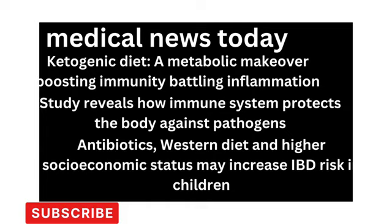Omega-3 fatty acids are considered essential because the body cannot make them and must obtain them through foods such as fish, nuts, and seeds. DHA levels are especially high in the brain and important for a healthy nervous system. Infants obtain DHA from breast milk or formula, and deficiencies of this fatty acid have been linked to problems with learning and memory. To get to the brain, omega-3 fatty acids must pass through the blood-brain barrier via the lipid transporter MFSD2A, which is essential for normal brain development. Despite its importance, scientists did not know precisely how MFSD2A transports DHA and other omega-3 fatty acids.